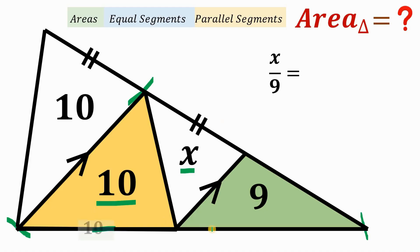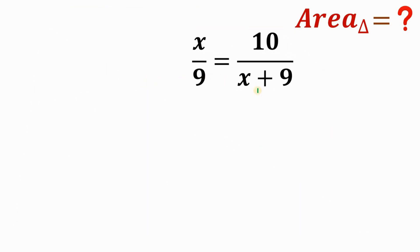So this length is 10 and this length is just X plus 9. And these are the segments that is equivalent to X is to 9. So we can say that X is to 9 is equivalent to 10 is to X plus 9. Now, if we focus on this equation, we can solve for the value of this X, which is the area of this small triangle. So let's focus on this equation.